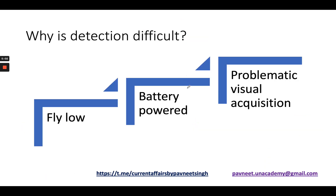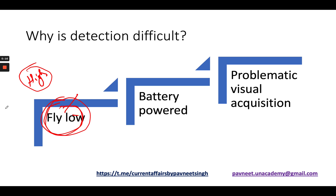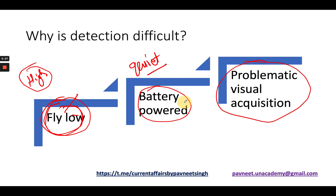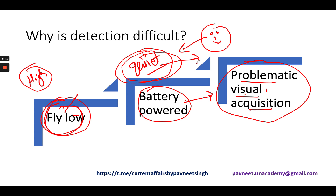Why is detection of drones very difficult? The first factor is that they fly low — if they fly high, radars can detect them, but if they fly low we need special radars for that. The second factor is that they are battery-powered, making them relatively quiet. Third, because they are quiet, there is problematic visual acquisition — by visually observing, we cannot easily tell whether a drone is entering our territory. Pakistan will not use drones in daytime; they prefer nighttime, making visual acquisition even more difficult.